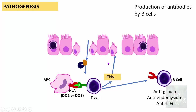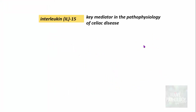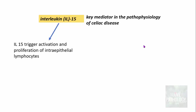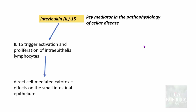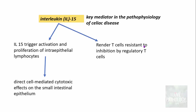This explains why there is epithelial damage and an increased number of intra-epithelial T lymphocytes. That's the major mechanism of celiac disease pathogenesis. Notably, interleukin-15 is a key mediator: it triggers activation and proliferation of intra-epithelial lymphocytes, causes direct cell-mediated cytotoxic effects on small intestinal epithelium, and also renders T cells resistant to inhibition by regulatory T cells, resulting in loss of tolerance.